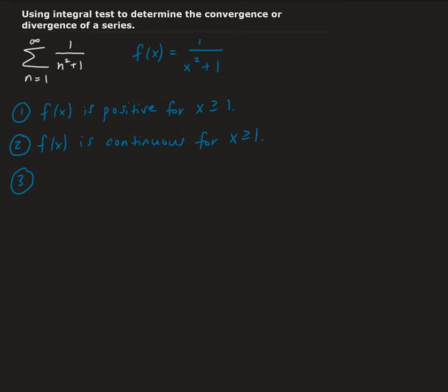The next thing is we need to show that this function is decreasing. Is it decreasing on 1 to infinity? That's what we need to show. Intuitively we can see it's decreasing, but we need to verify that more rigorously. We're going to use the first derivative test to do this. We're going to take the derivative over here.